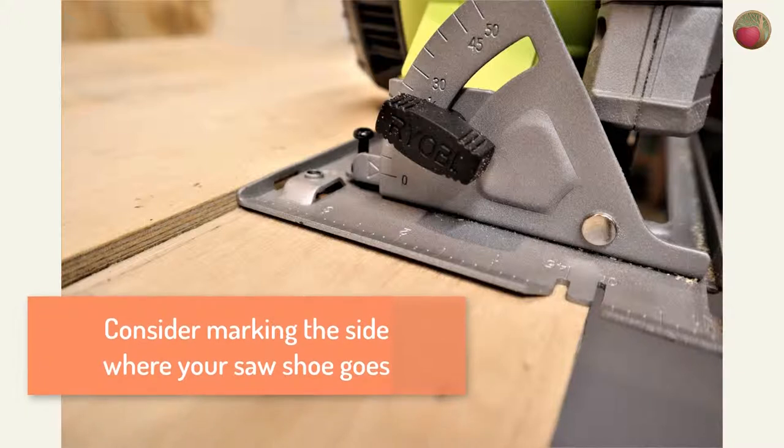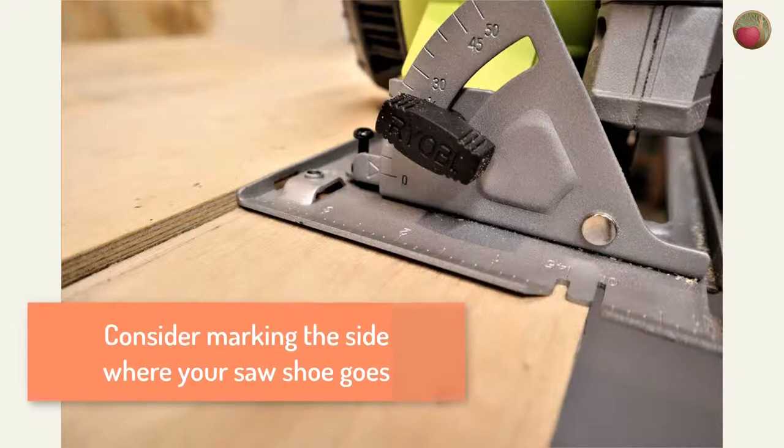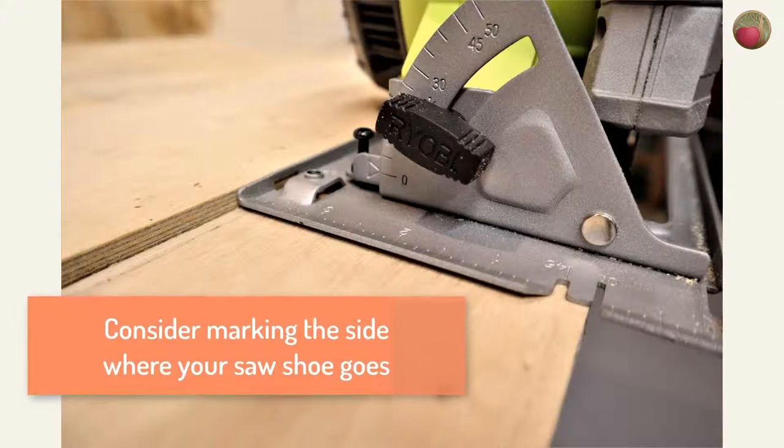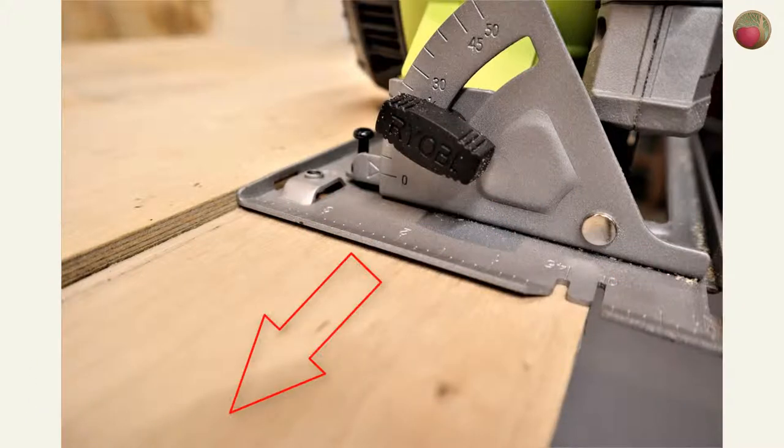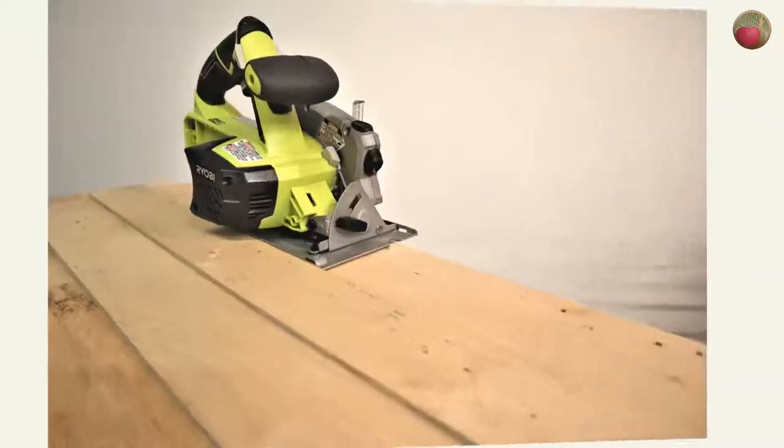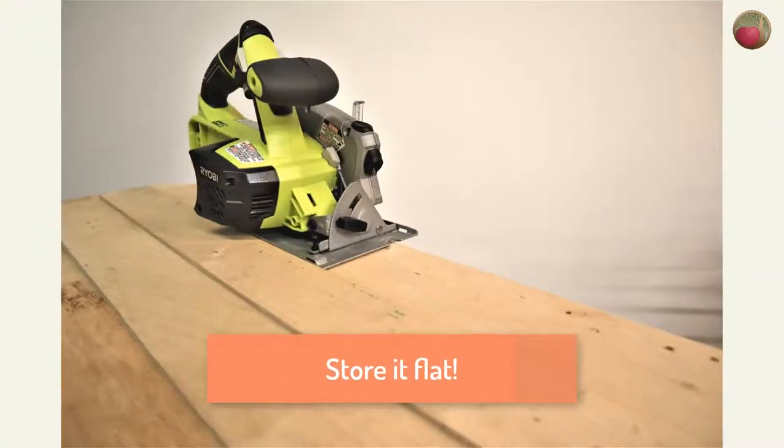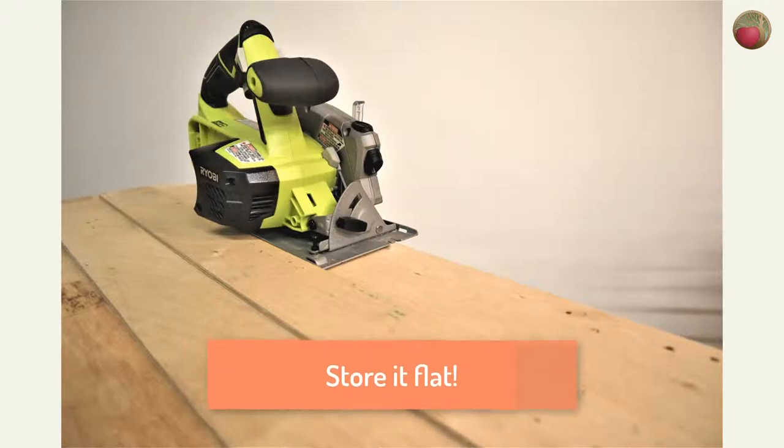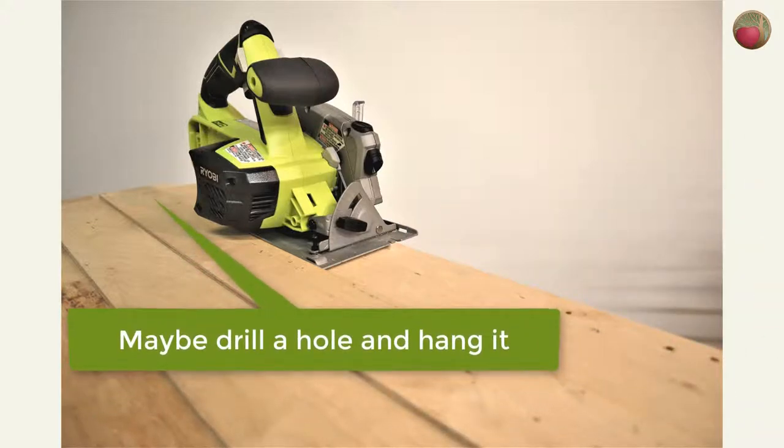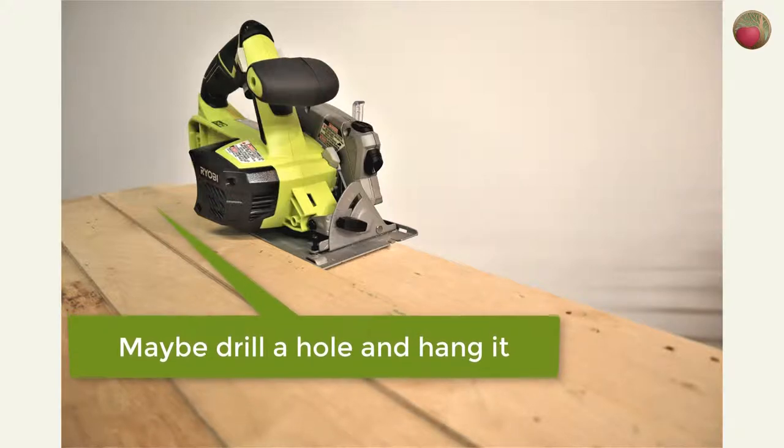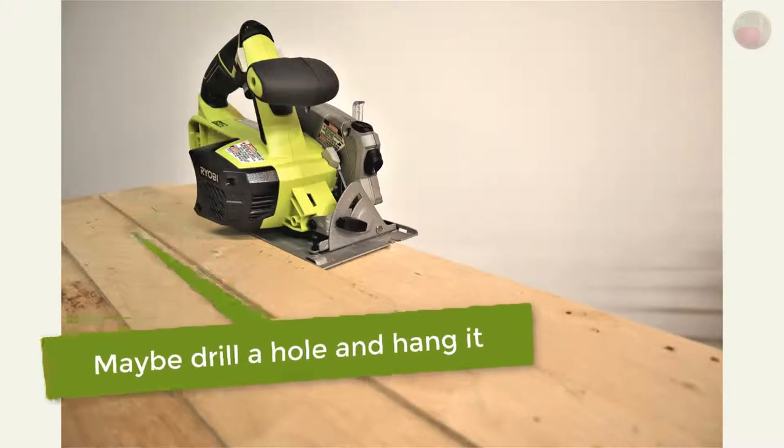Now since the base board is about the same width on each side of the guide board, consider marking the side where your shoe will rest. I even marked a few arrows on that side in the direction that I'll be cutting to help me remember. And you should always lay your straight edge flat so that it never bows. That's especially true if you used one quarter inch plywood as it is more flexible. And you could also drill a hole through one end about one inch down from the edge and through both boards and hang the assembly on a hook.